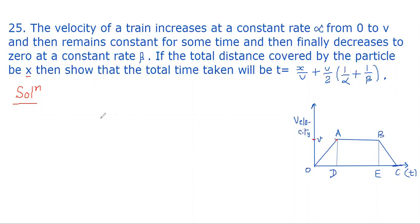Let's write alpha. Alpha is the acceleration, so it will be AD divided by OD. Alpha equals AD, which is the velocity attained, the maximum value of velocity that is v, divided by OD. So from here we get OD = v/alpha.